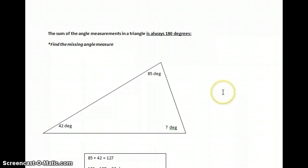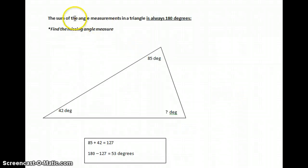Now, we get to the sum of the angle measures in a triangle is always 180 degrees. Any triangle you have, if you add up the angle measures, it will be 180 degrees. So, you might have a question like this that says, find the missing angle measure. It gives you two of them, 42 and 85.